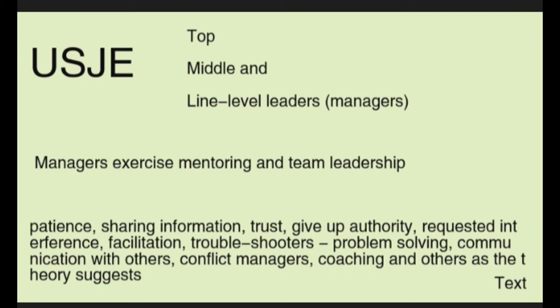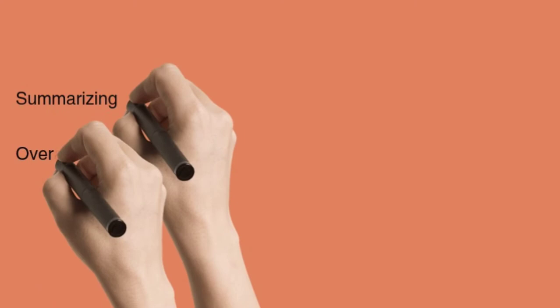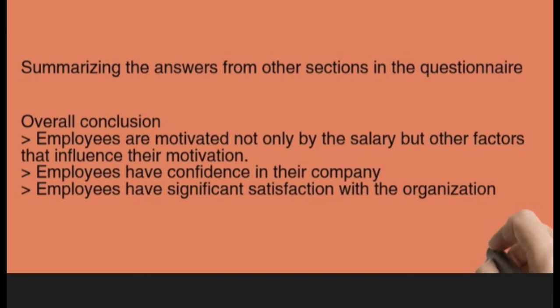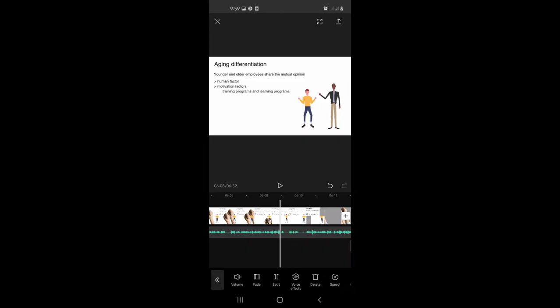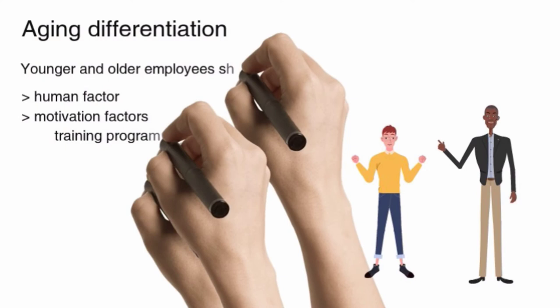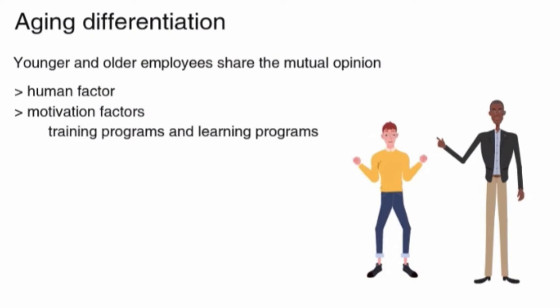Managers in USJE also apply facilitation, troubleshooting, problem-solving, communication with others, conflict management, coaching, and other skills as the theory suggests. Summarizing the answers from other questionnaire sections, the overall conclusion is that employees in the company are quite motivated not only by salary but also by other factors. The employees have confidence in their company, and results indicate significant satisfaction with the organization. Both younger and older employees share the mutual opinion that the company pays a lot of attention to the human factor as a basis for performance improvement, including education through various training and learning programs contributing to employees' professional and personal performance.